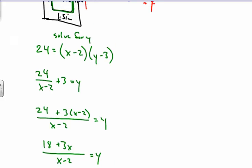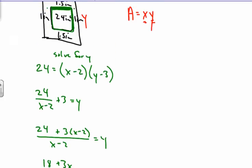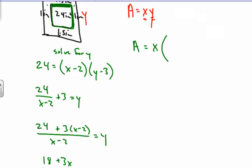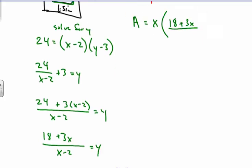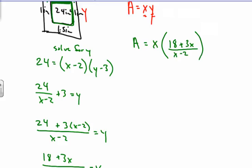Now, that's y and we're going to take that equation and plug it into here. So we have A equals x. Well, y, we find out, is equivalent to 18 plus 3x over x minus 2. And that's our equation right there. From here, we can distribute this x through. And what we have then is A equals 18x plus 3x squared all over x minus 2 right there.